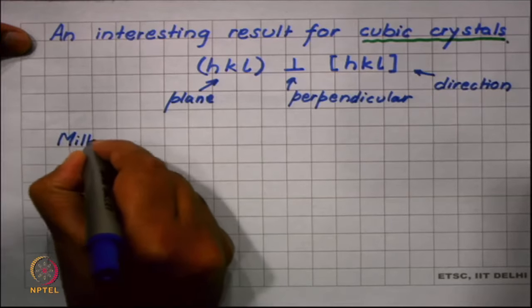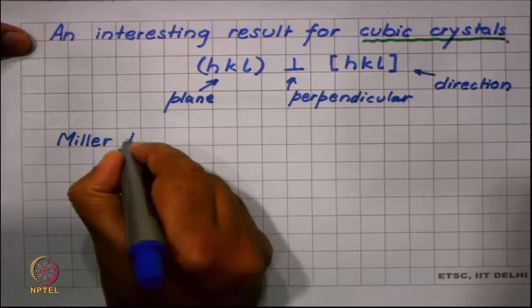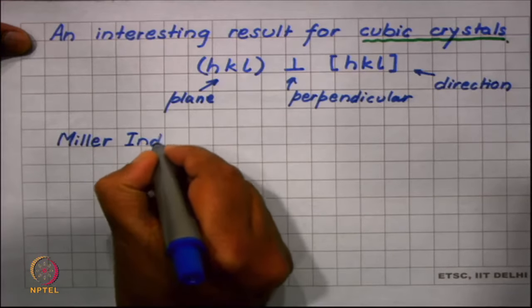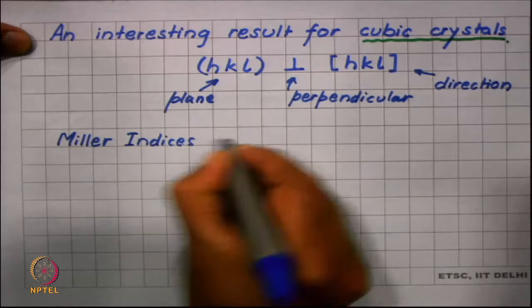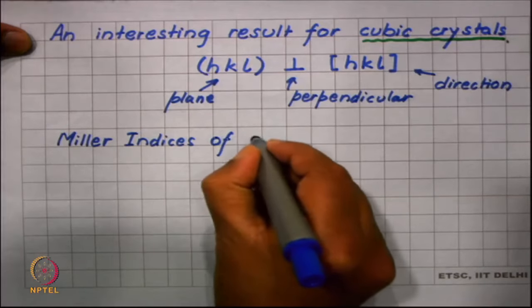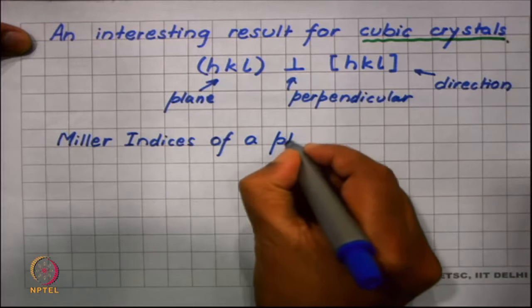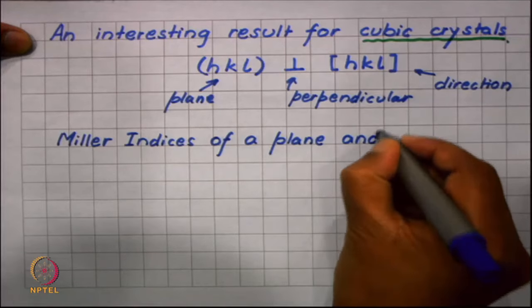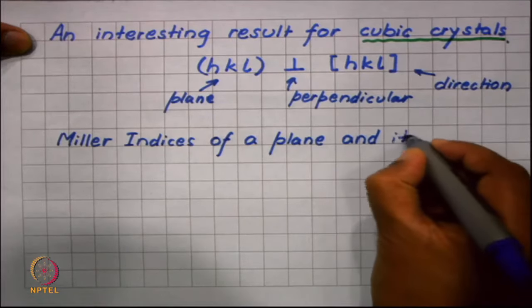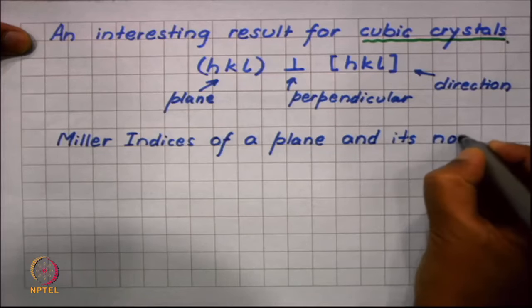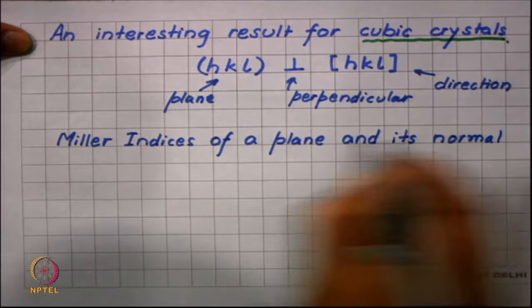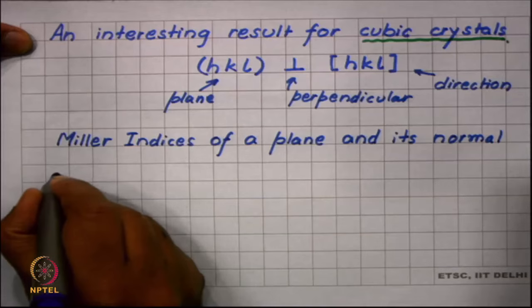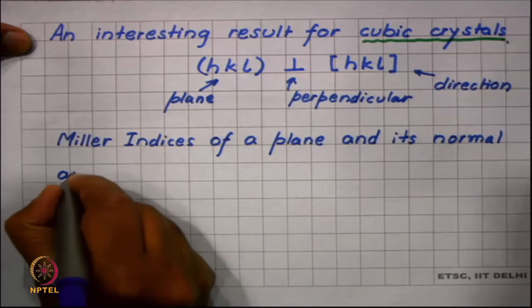Let me write: Miller indices of a plane and direction are identical.